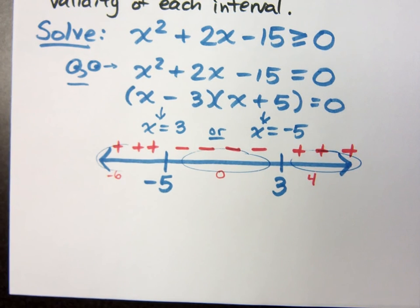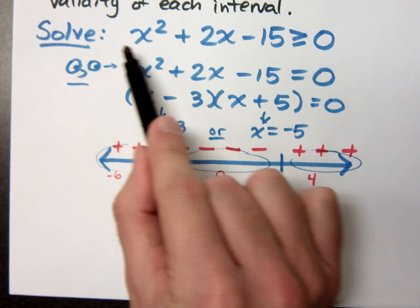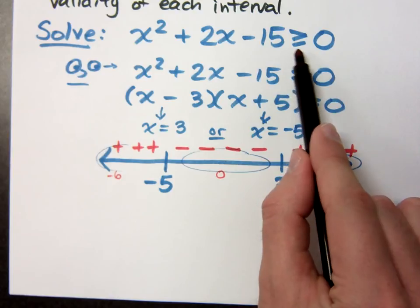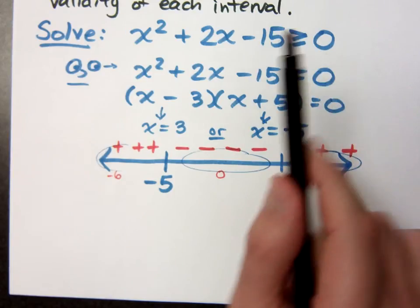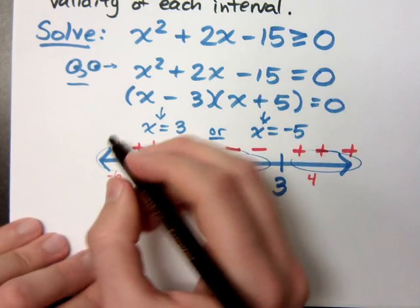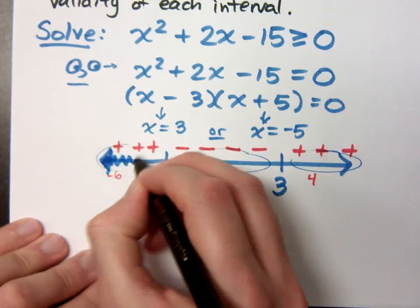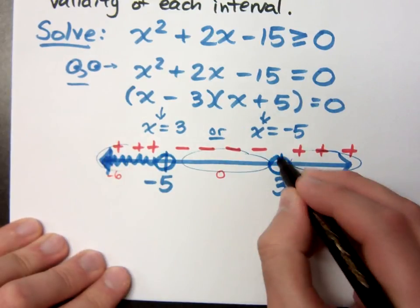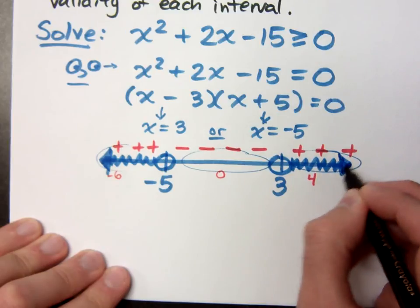Now, look at my original inequality. My original inequality, I was looking for those values that were greater than or equal to 0. So for those guys that were greater than or equal to 0, that corresponds to this stuff and this other interval right here.